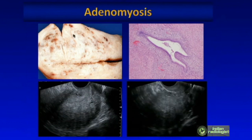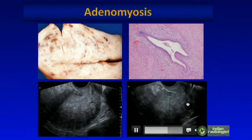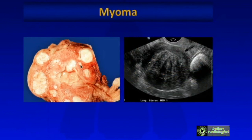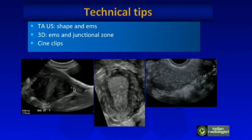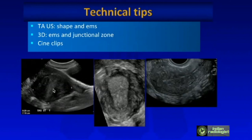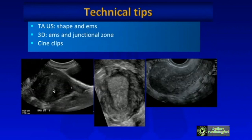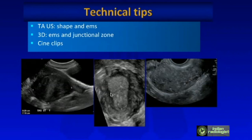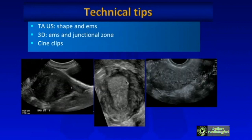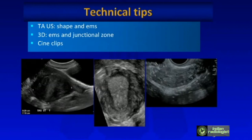In adenomyosis, there are no defined borders to these lesions. By contrast, myomas are well encapsulated and should present as well-defined lesions — in my mind, there is no such thing as an ill-defined myoma. Ultrasound is helpful because in large lesions it's hard to see borders or penetrate with vaginal examination alone. The 3D coronal reconstruction is really helpful for evaluating the junctional zone at the border between the endometrium and myometrium.